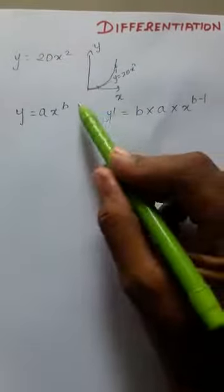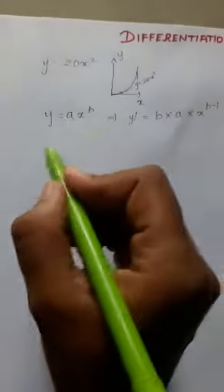So my derivative will be written as y dash equals b into a into x to the power b minus 1. So from the given equation...